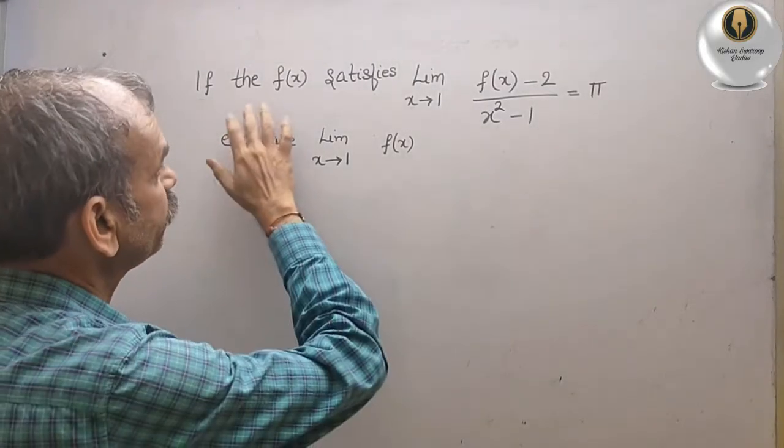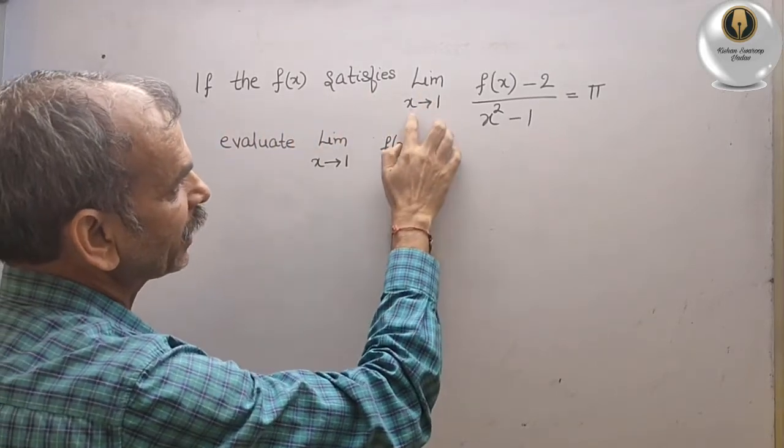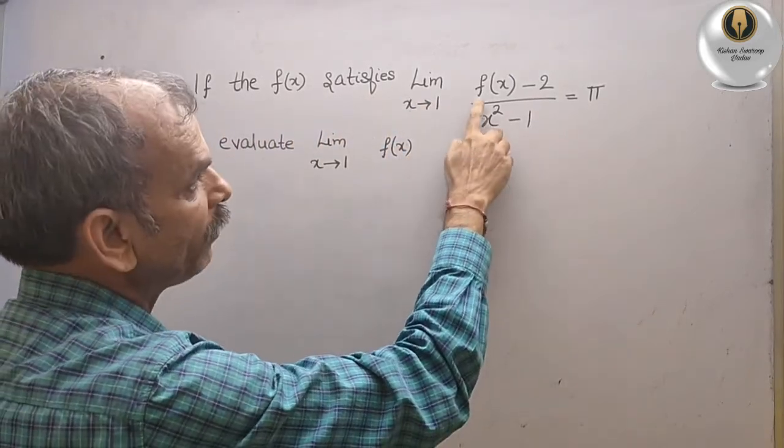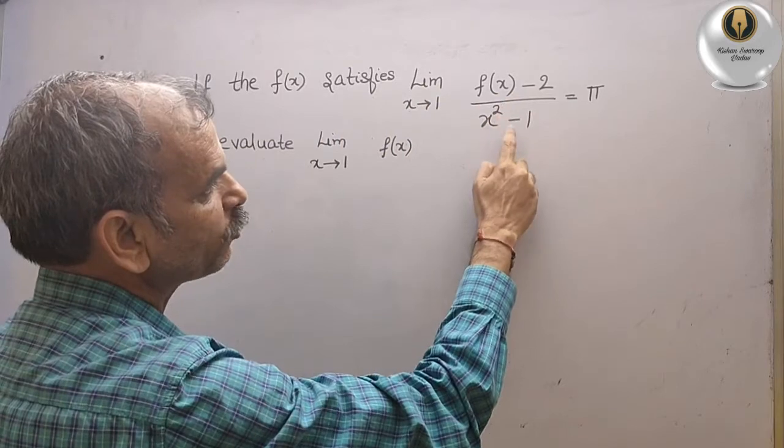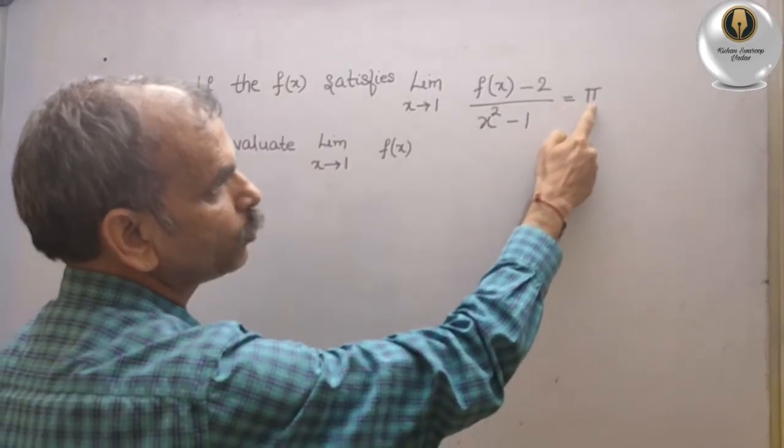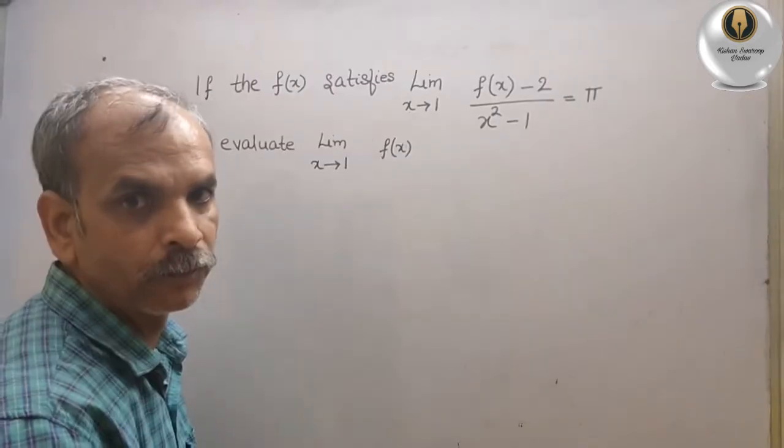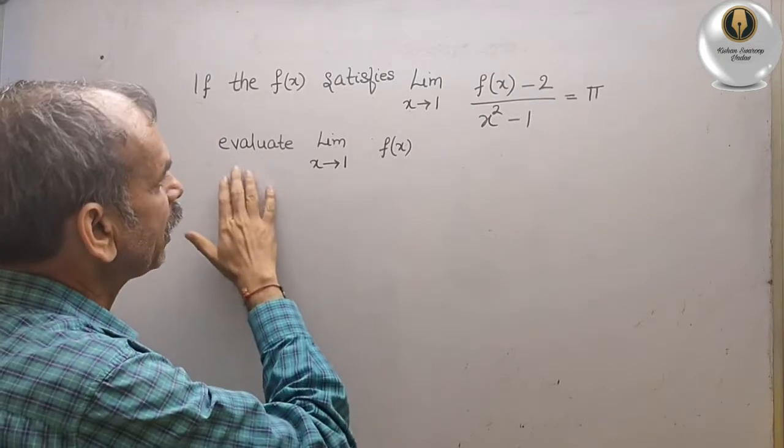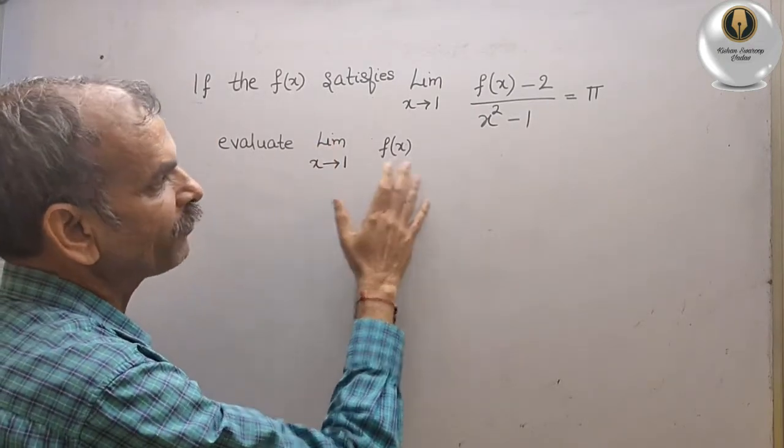Your question is, if f(x) satisfies limit x tends to 1, f(x) minus 2 by x square minus 1 is equal to pi, evaluate limit x tends to 1, f(x).